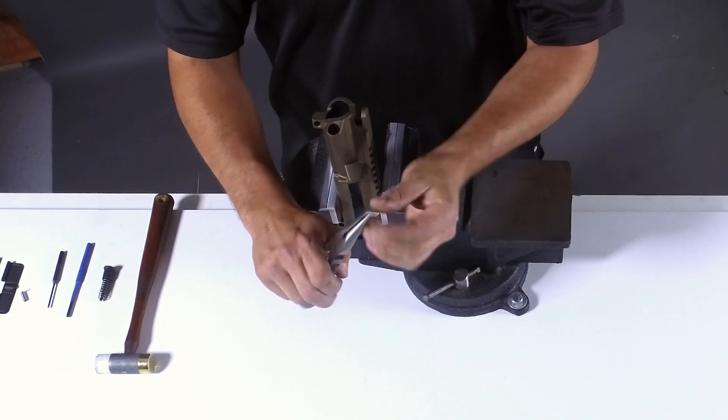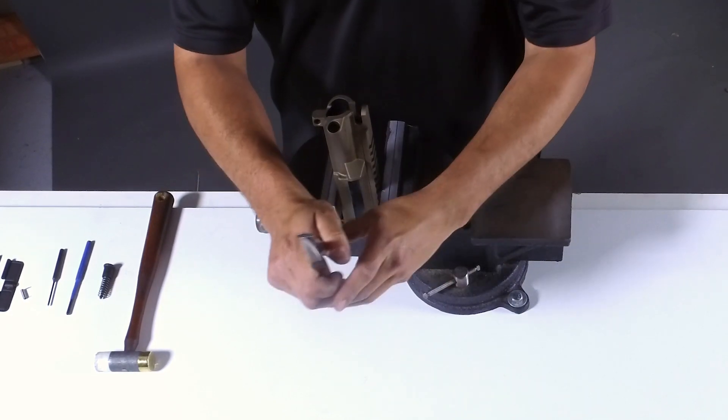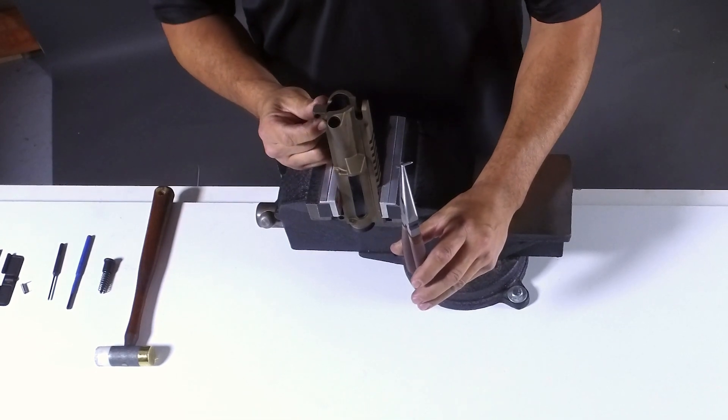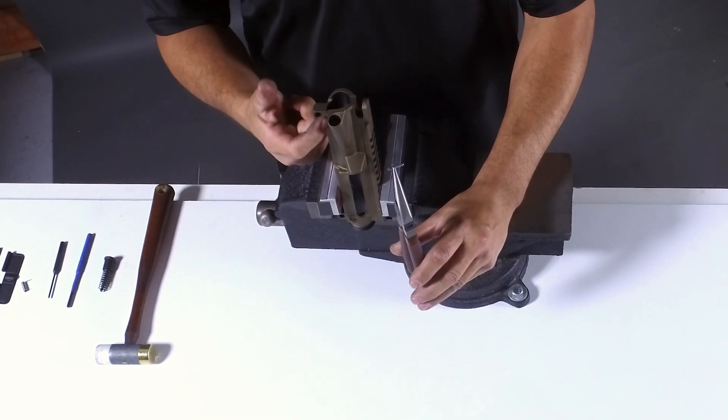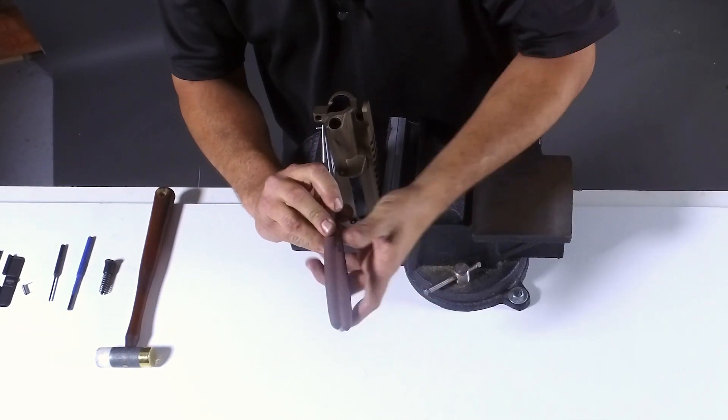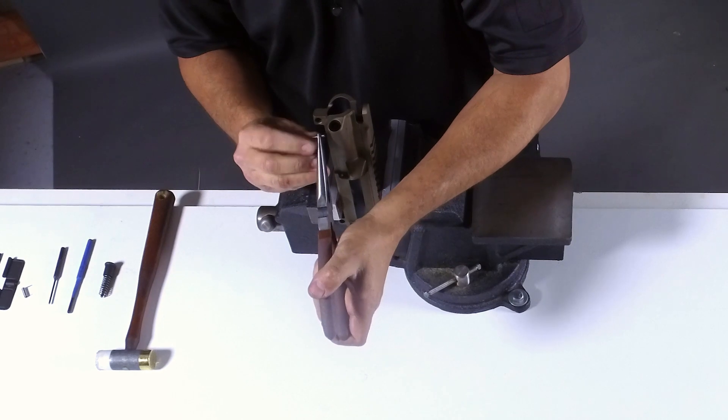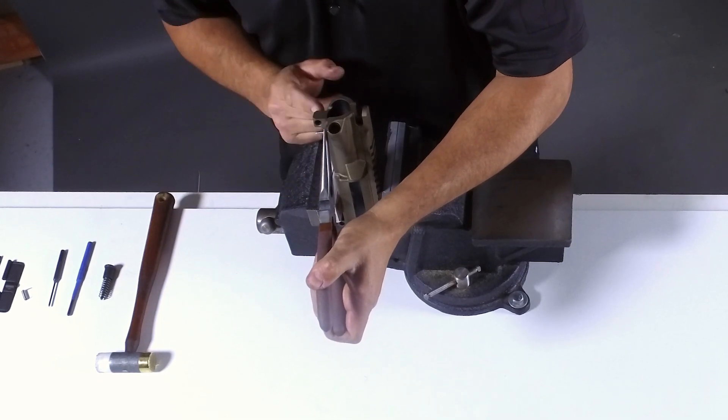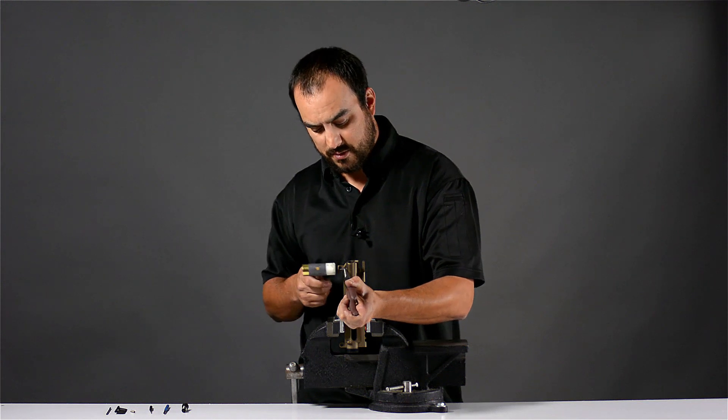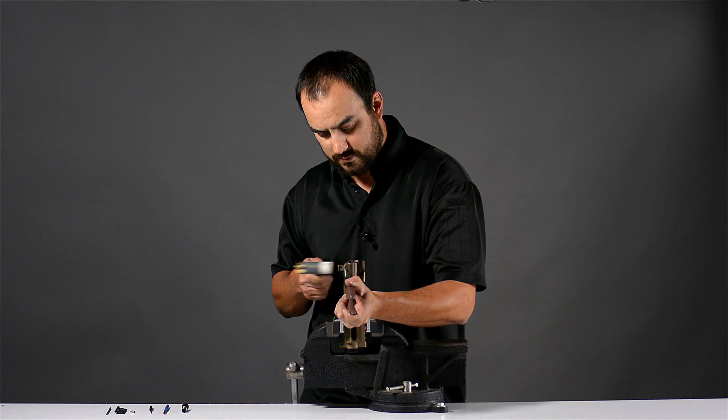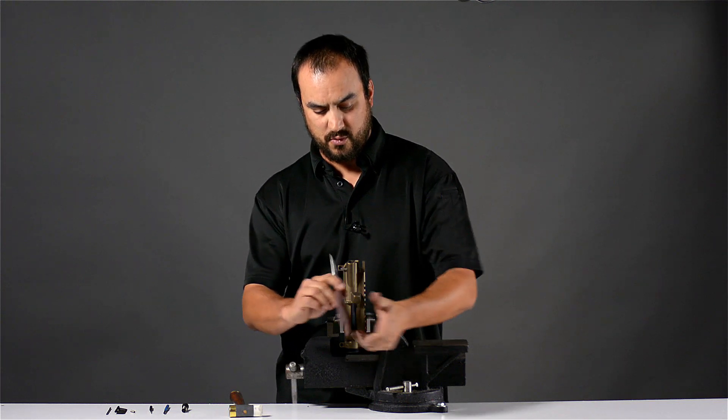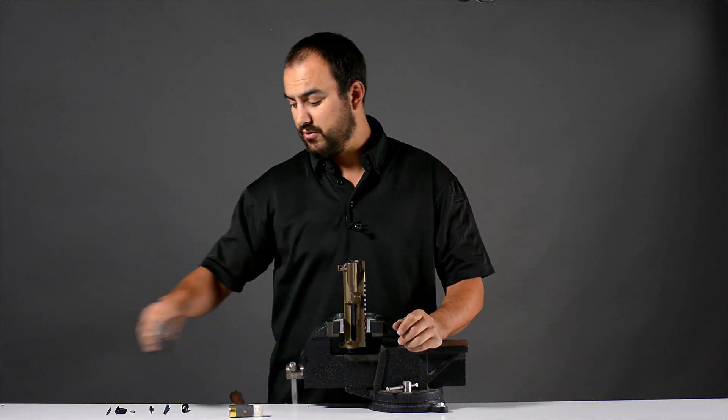I like to put the roll pin in the middle of the needle nose pliers. One thing I am always careful for is that I don't scratch the upper receiver. Some people can put tape here. For this video, we are just going to be careful. We are going to get the pin in the hole. Using the delrin side of our hammer, we are going to tap just to get it started. Once we know that we have gotten it started, we can now put the needle nose to the side.